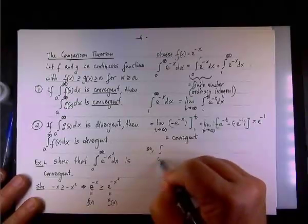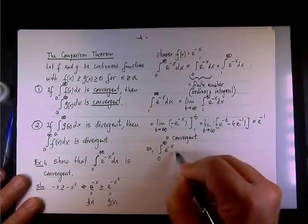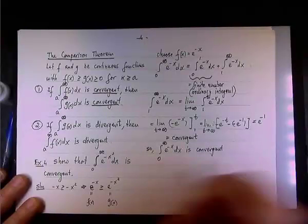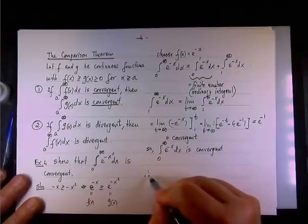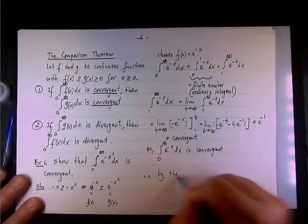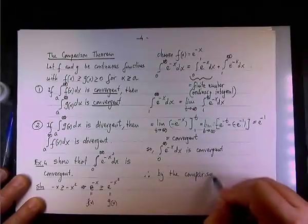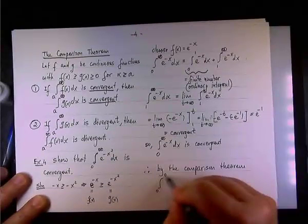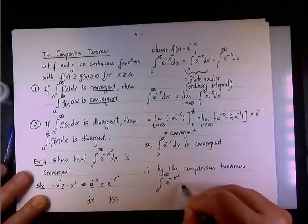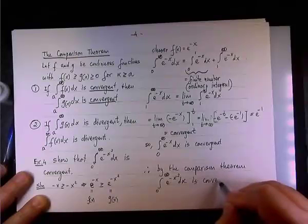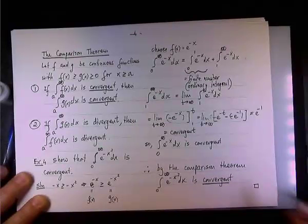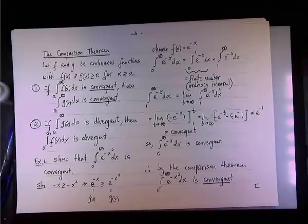So the integral from zero to infinity of e^(-x) dx is convergent. And therefore, by the comparison theorem, we obtain that the integral from zero to infinity of e^(-x²) dx is convergent as well. And so that completes the proof.